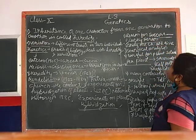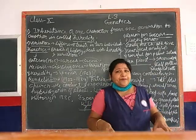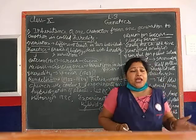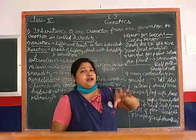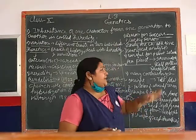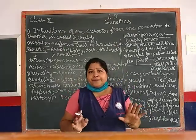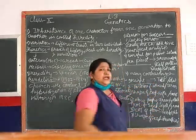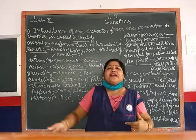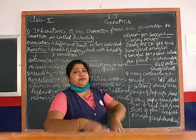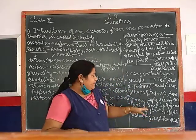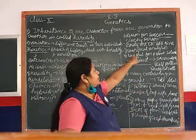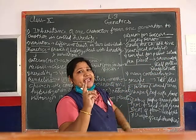Second, he studied one character at a time. He selected every plant carefully. Whatever plant he selected for his observations, he observed one character at a time. For example, if he studied the height of a plant, he only took the height for his observations, not other traits. He took one character at a time. This is also a good thing - he did not study all characters together.